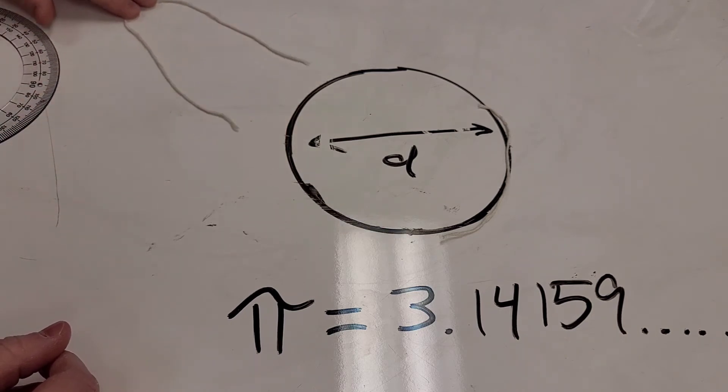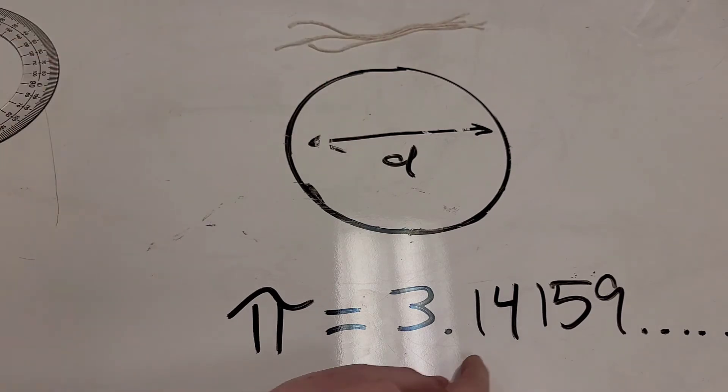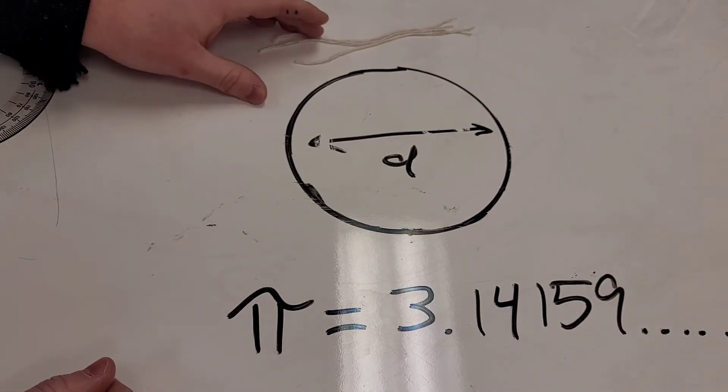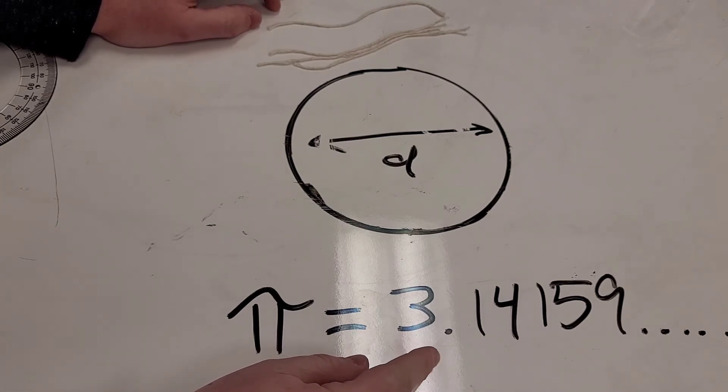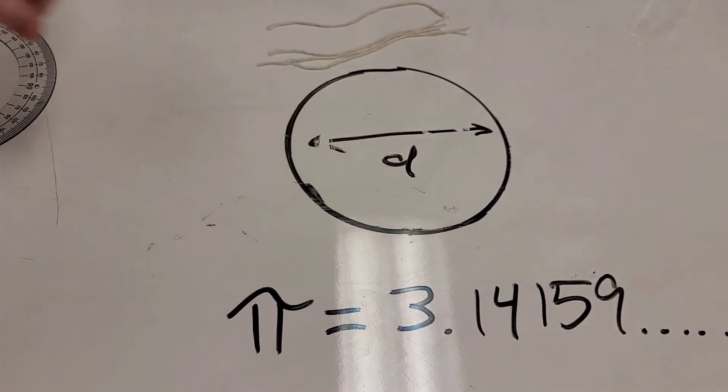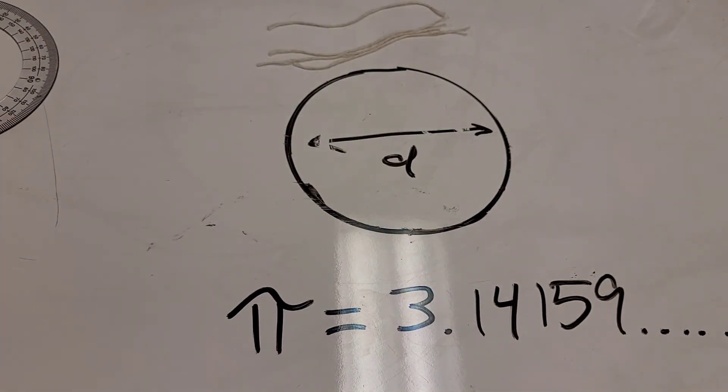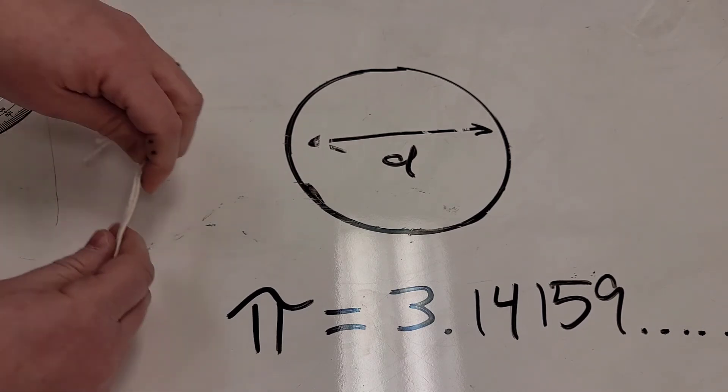The circumference will always be equal to 3.14159, or pi, times the diameter. So if you take the diameter of any circle and multiply it by 3.14159, you will get the circumference. That's why we use it to find areas of circles and all sorts of things, because when it comes to the circle, that is the closest and most accurate way we've come to compare the diameter.